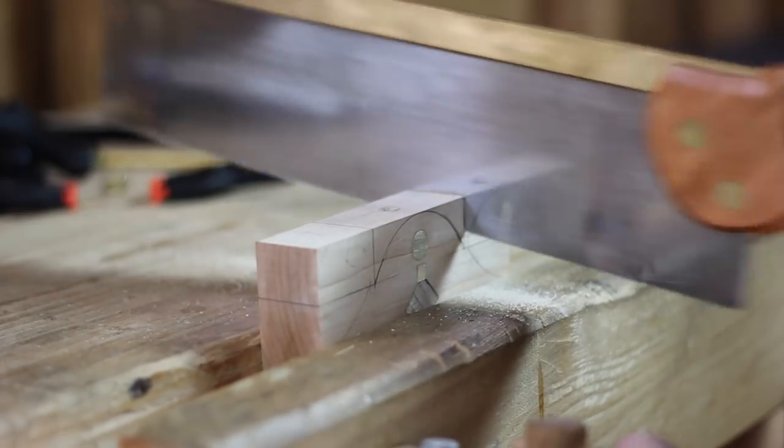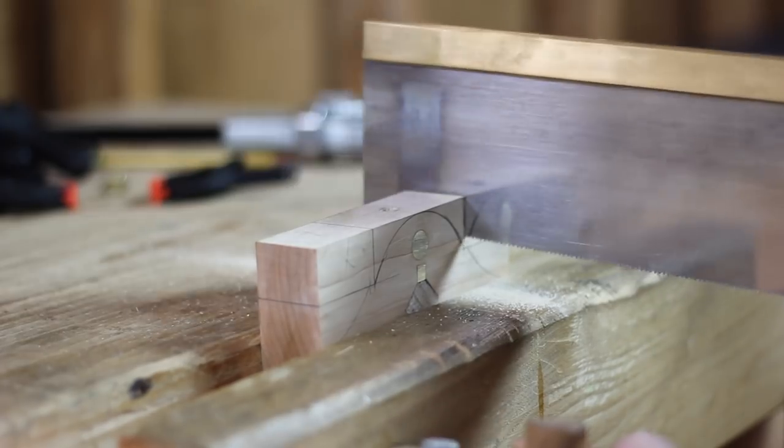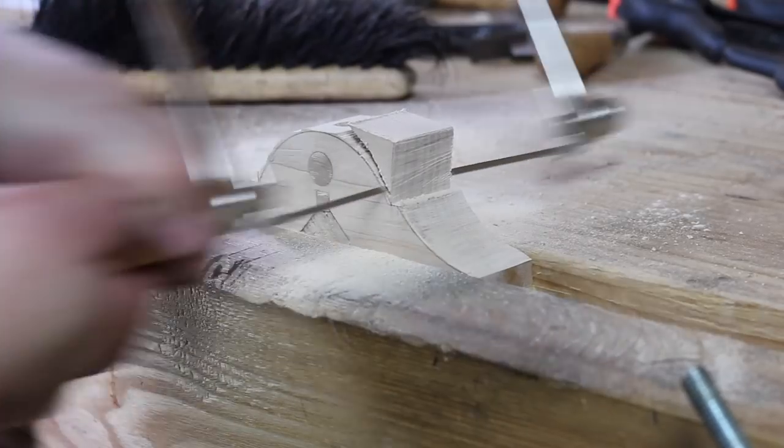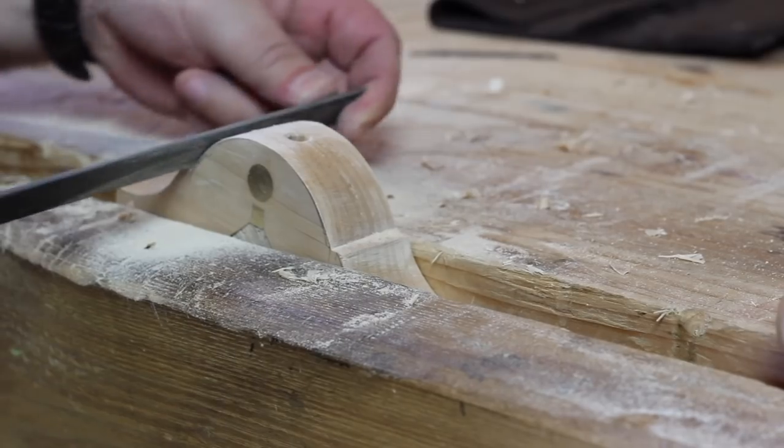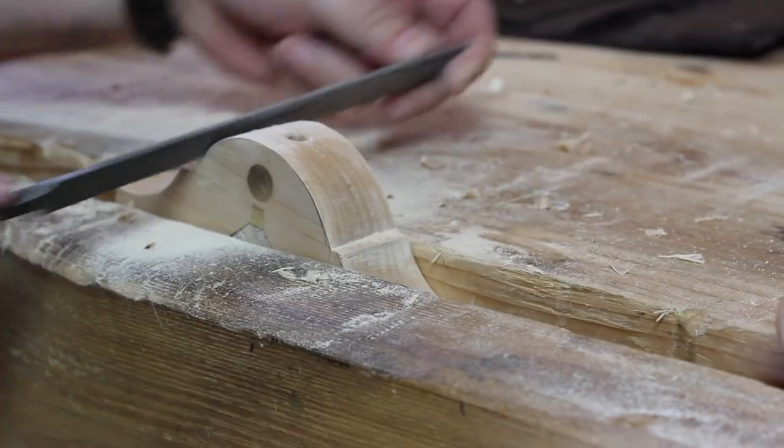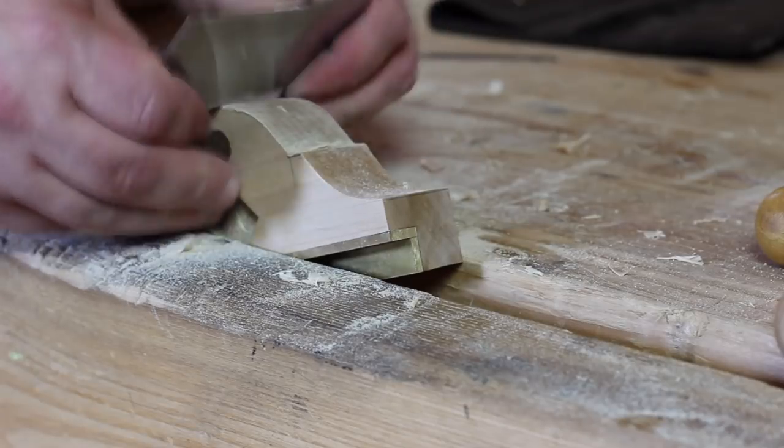After filing all the brass flush, I shaped the fence to its final profile. To do this, I used a sash saw to remove most of the waste, followed by a coping saw, and then files and scrapers to finish the shaping and smoothing of the fence.